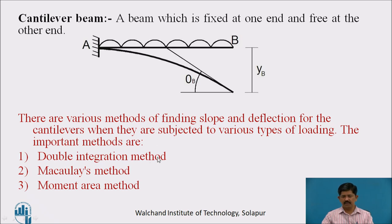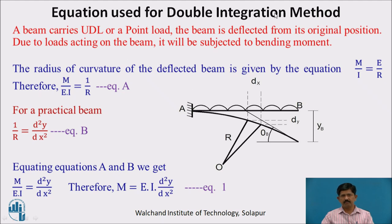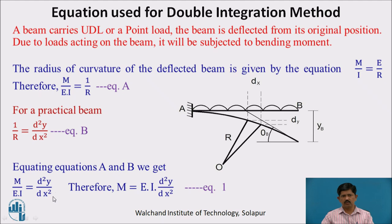Now, what is the equation for the double integration method? When the beam deflects, it has a curvature with a center point and a radius of curvature R. The radius of curvature of the deflected beam is given by the flexural equation: M/I = E/R, therefore M/(EI) = 1/R (Equation A). Mathematically, 1/R = d²y/dx² (Equation B). Equating A and B: M/(EI) = d²y/dx², therefore M = EI·d²y/dx². This is the governing equation for the double integration method.